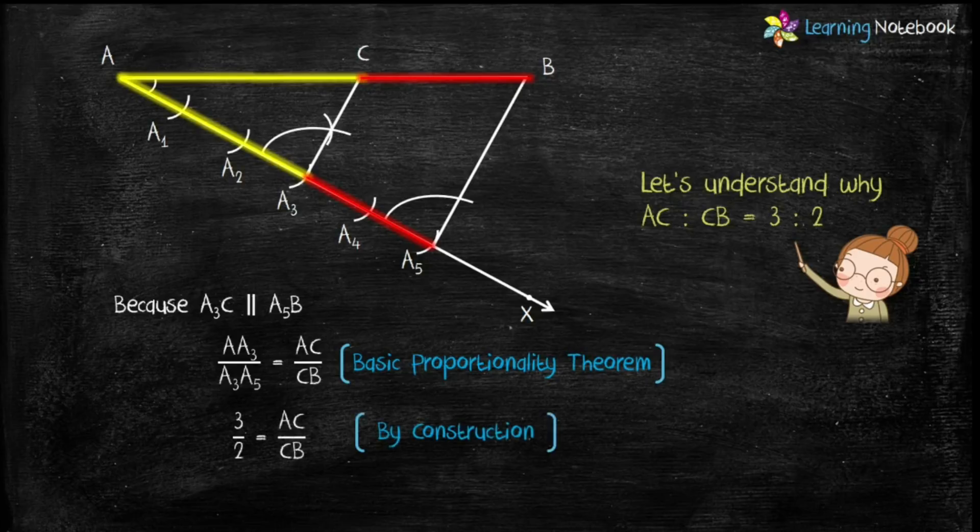By construction, AA₃/A₃A₅ = 3/2. So AC/CB = 3/2. Therefore, AC:CB = 3:2.